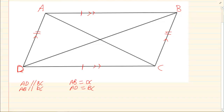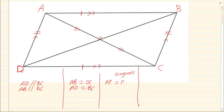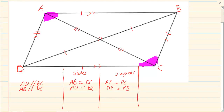The third one is that the diagonals bisect each other. So AP would equal to PC, and DP is equal to PB. We have the sides that are equal, and now we have the diagonals that bisect. Then we have that the opposite angles are equal — that means that angle A is equal to angle C, and angle B is equal to angle D.